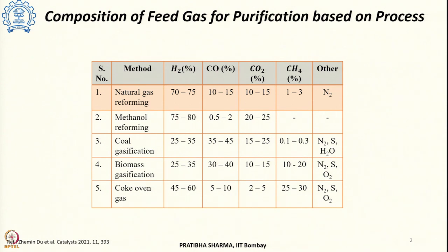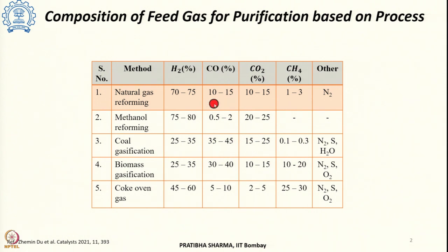Steam methane reforming, which is the most widely used method for hydrogen production, has 70 to 75% of hydrogen in it, 10 to 15% of carbon monoxide, carbon dioxide, 1 to 3% of unreacted methane and some small fraction of nitrogen.